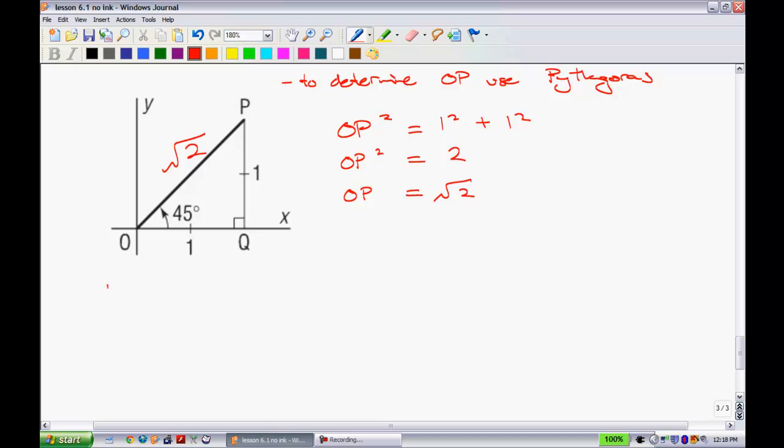Let's start with tangent, tangent of 45 degrees. Using this exact value triangle, we would see that tangent is equal to my opposite one over my adjacent one, which is equal to one.